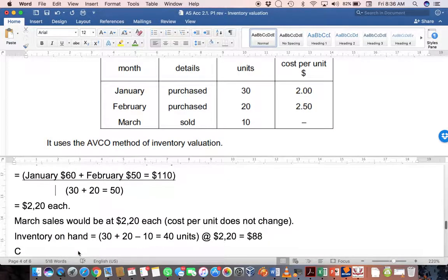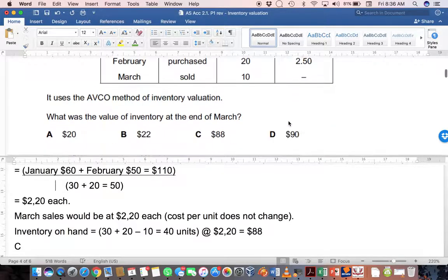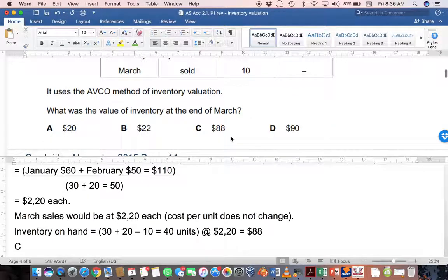Now look at the sales. The sales would be at the selling price but the cost of those sales would be at this average of $2.20 each. So your inventory on hand will be 40 units at $2.20, which is $88. Notice that when you sell units you sell them at $2.20 and whatever is left over will also be at $2.20. Although the value changes when you buy stock, it doesn't change when you sell stock. If you look at the values given to you, you'll choose C as the value of inventory at the end of March.